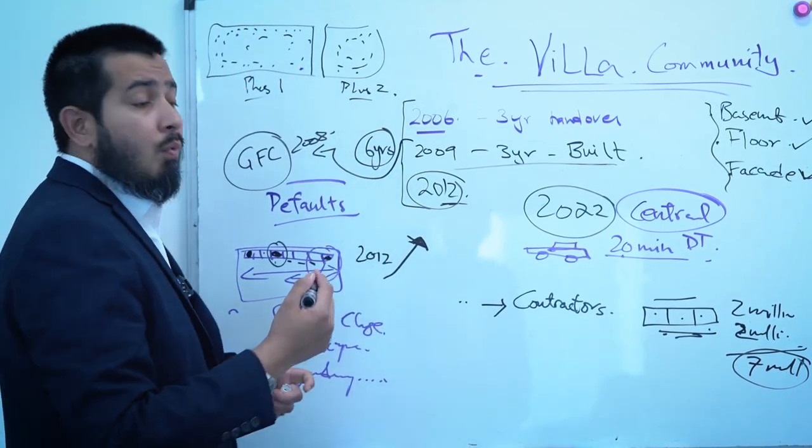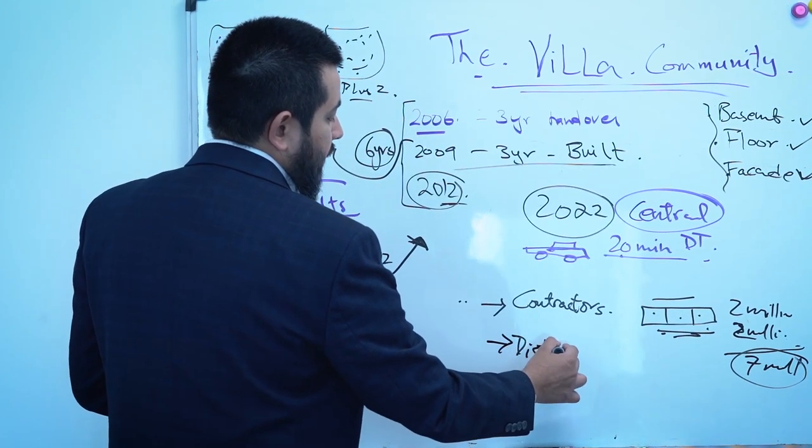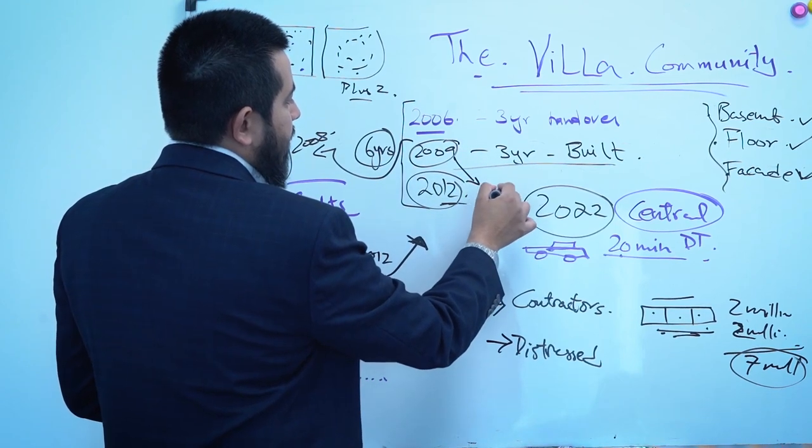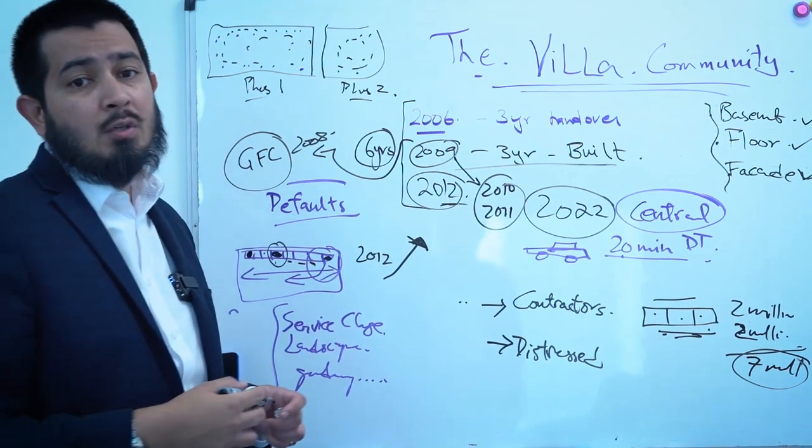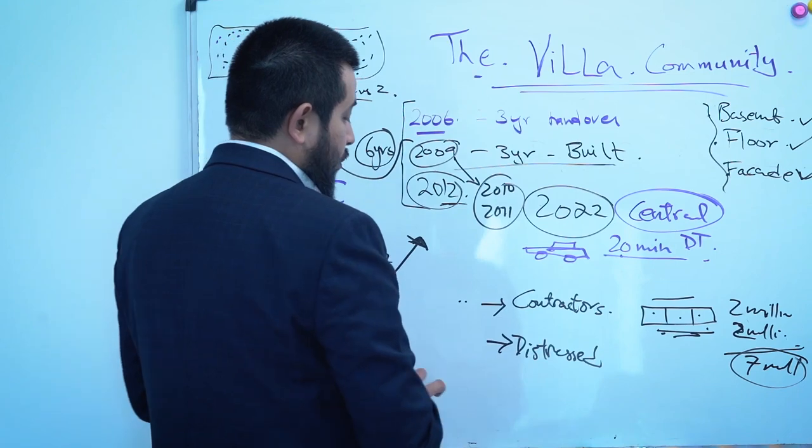The other people who made money were the investors who picked up distress units, distress plots. So in 2009 or 2010 or 2011 if you wanted to make money you just picked up something distressed.